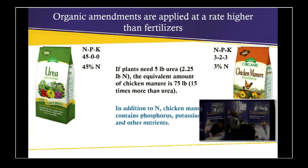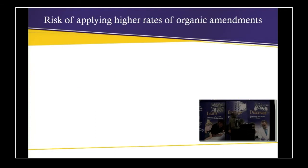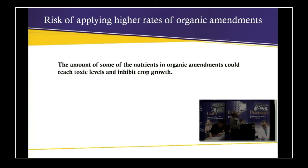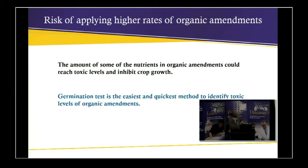In addition to nitrogen, chicken manure contains phosphorus, potassium, and other nutrients. Dr. Fares also showed the contents of all the elements found in chicken manure. The risk of applying high rates of organic amendments is that the amount of some nutrients could reach toxic levels and inhibit crop growth.